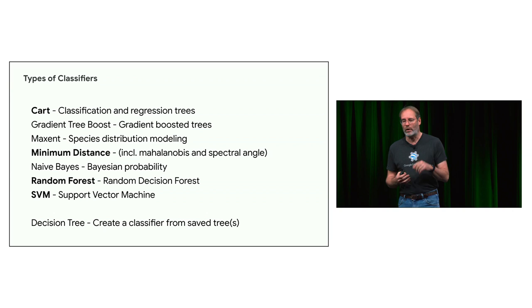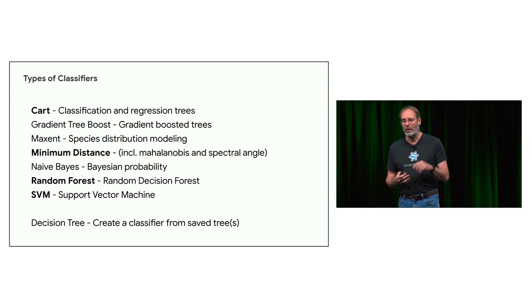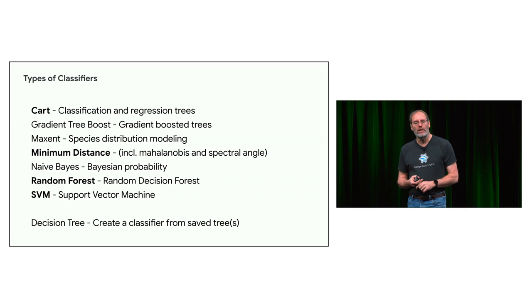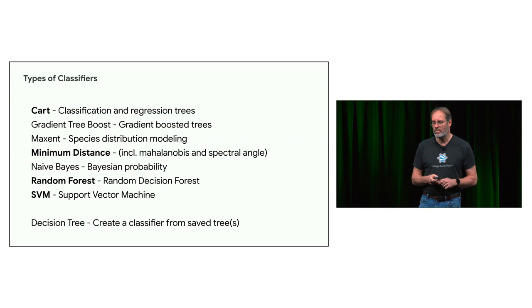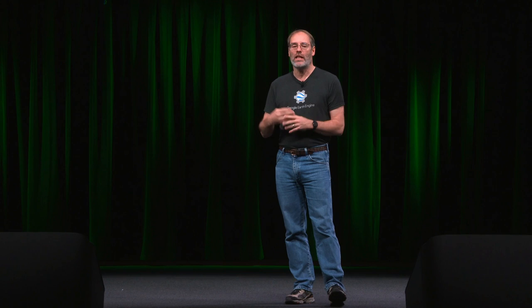Under specialized circumstances, there are additional classifiers. If you're doing species distribution modeling, a MaxEnt classifier was added about a year ago. Gradient tree boosting is a version of tree classifiers with a kickstart at the beginning to make it run faster. There are also classifiers for loading saved classifiers: Decision Tree and Decision Tree Ensemble, which let you load an existing CART that you've saved.